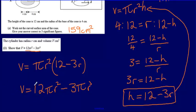So quite a complicated process there. But essentially, the key idea is recognising that we needed to find an expression for the height in terms of r. And because it's a 'show that' question, you have to show all the working in order to get there.